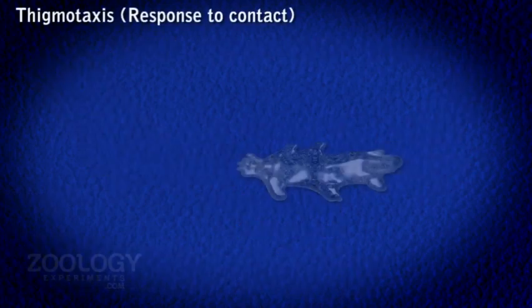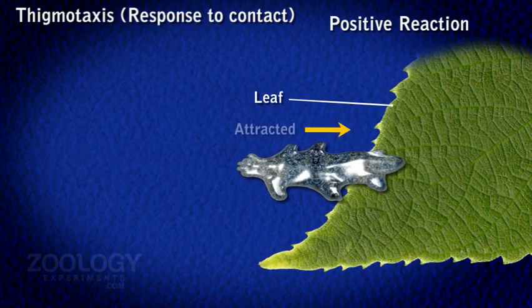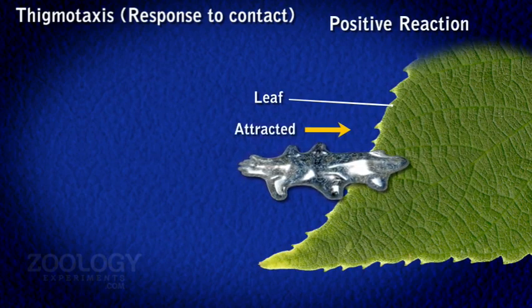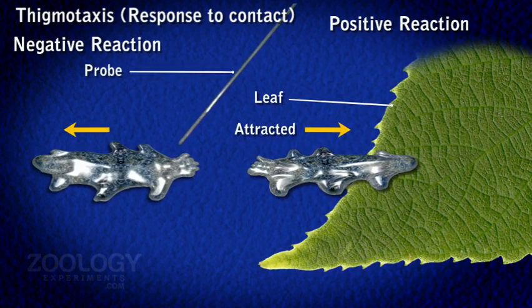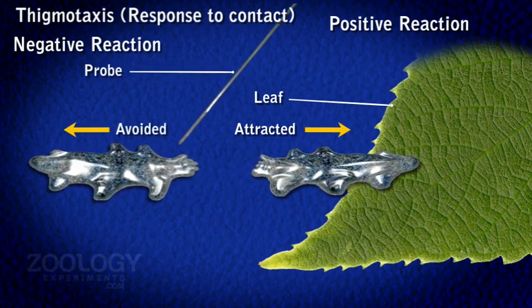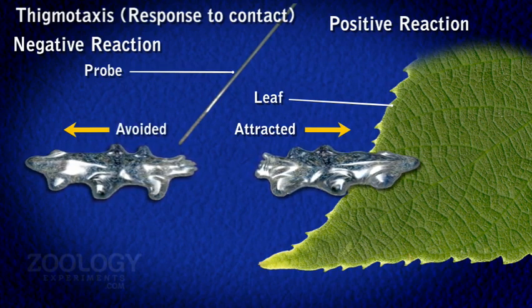Thigmotaxis: A floating amoeba responds positively to those objects upon which it glides. It will back away from contact with a foreign object while crawling or resting.